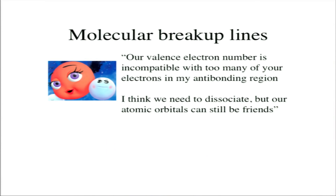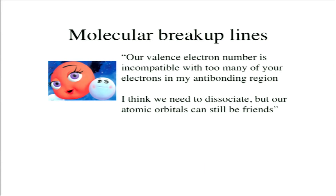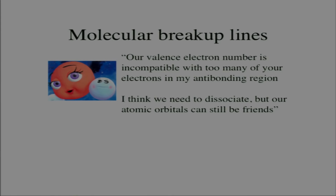To summarize with a cartoon analogy: sometimes two atoms just have an incompatible number of valence electrons. The molecule might say, 'I'm sorry, too many of your electrons are in my antibonding regions—it's time to dissociate.' But the atomic orbitals can still be friends.